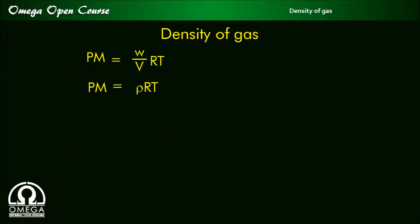Or PM equals w by V into RT, or PM equals ρRT, where ρ is equal to w by V and it is the density of the gas.